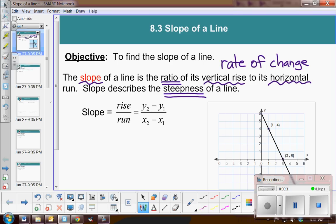Now slope, we are given a formula for slope because we're wanting to find the change of the vertical rise as compared to the horizontal run. So we will subtract the y values of the ordered pairs and compare that to the difference of the x values of the ordered pairs.